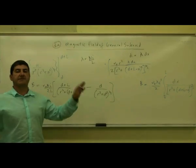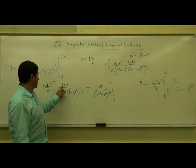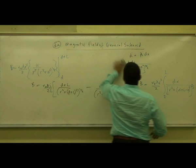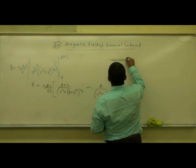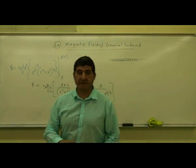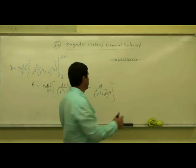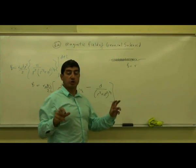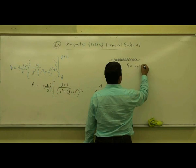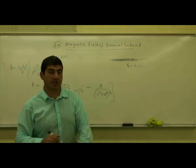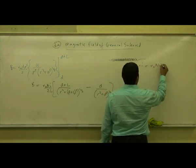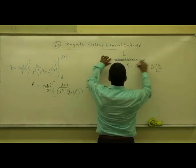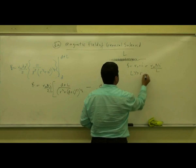This is the magnetic field of a general solenoid, at a distance D from one edge, for any length L, radius r, and number of turns N. From Ampere's law, we know that for a long solenoid — where L is much larger than the radius — the magnetic field inside is uniform and equal to mu_0 n I, where n is the number of turns per unit length, or equivalently mu_0 NI over L.